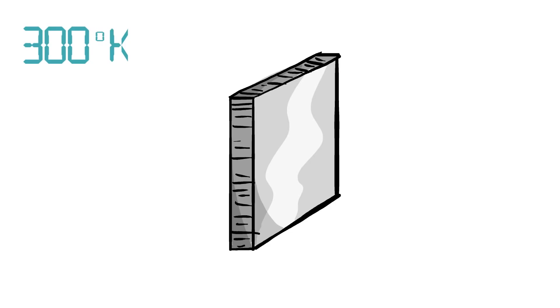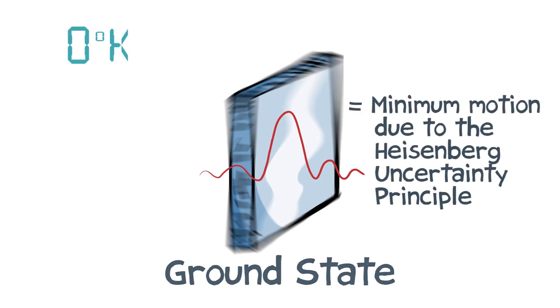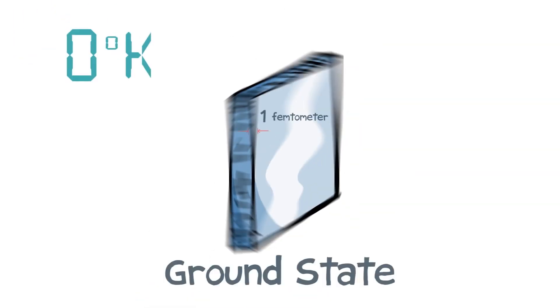In quantum mechanics, what happens when there's no excitations, you get to what's called the ground state, which is a solution for Schrodinger's equation. So this mirror, when it's completely cold, when it's not moving anymore, it should still be vibrating by a distance that's about one femtometer. And just this motion that we're trying to study is 100,000 times smaller than the radius of an atom.